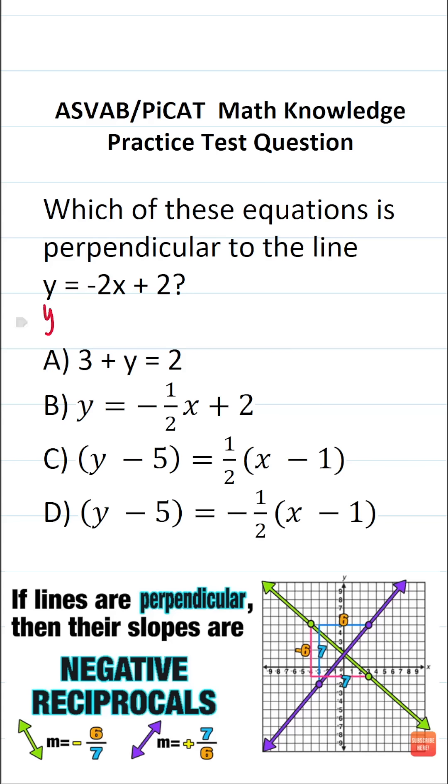More often than not, when we talk about equations of lines, they're going to be in slope intercept form, that is y equals mx plus b, where b is your y-intercept and m is your slope.